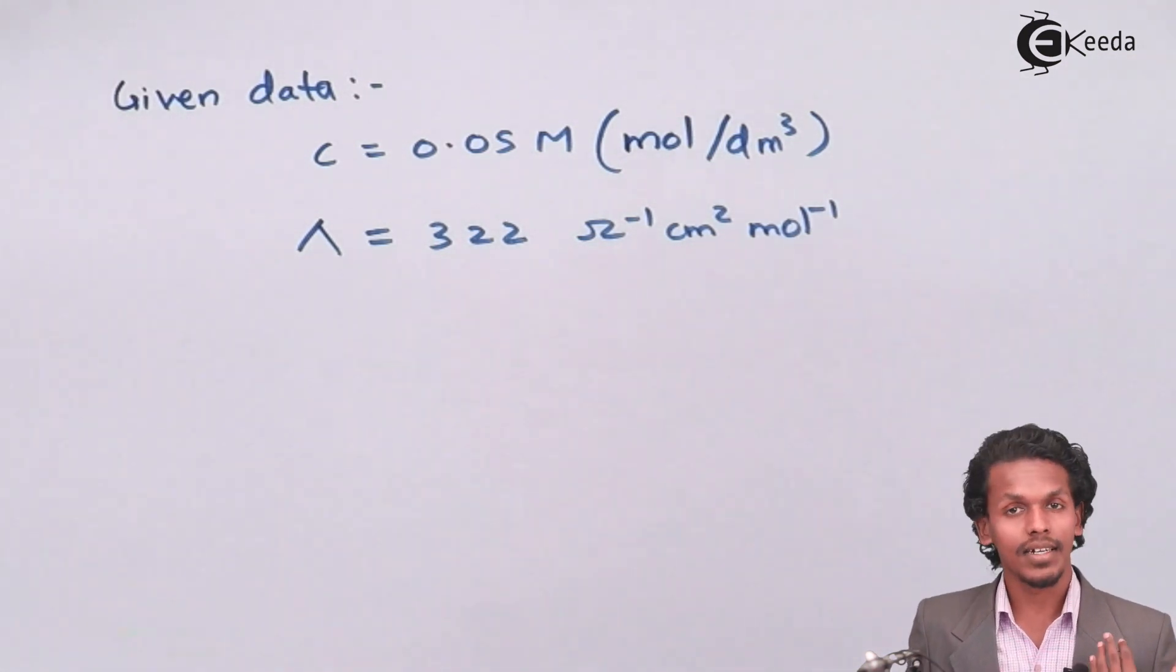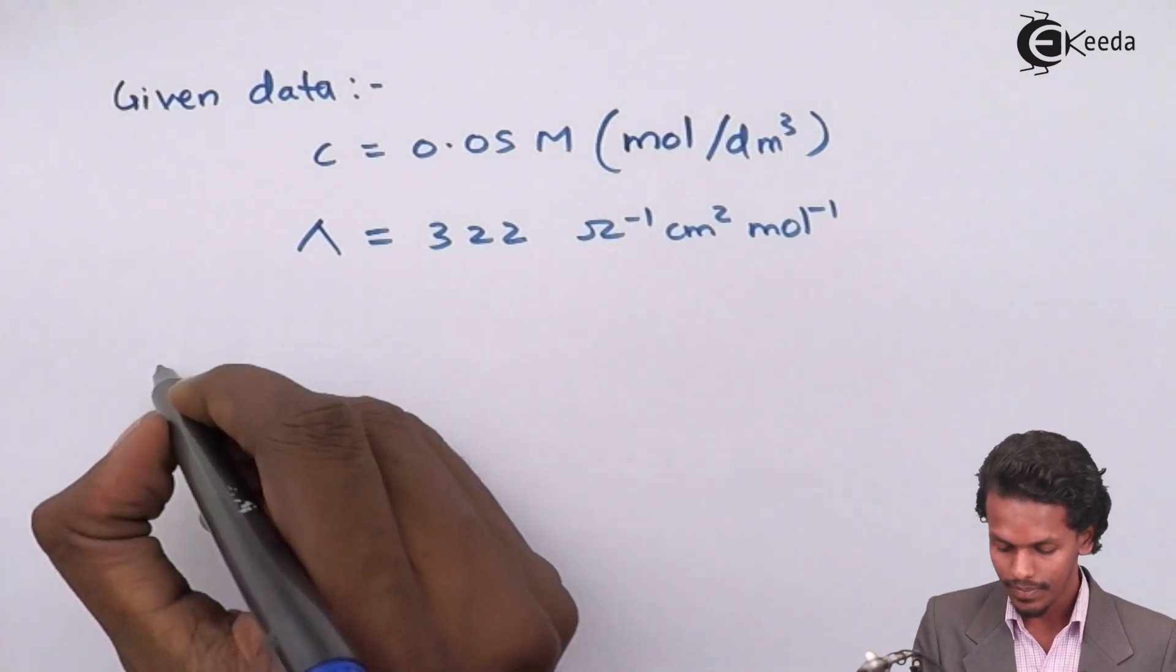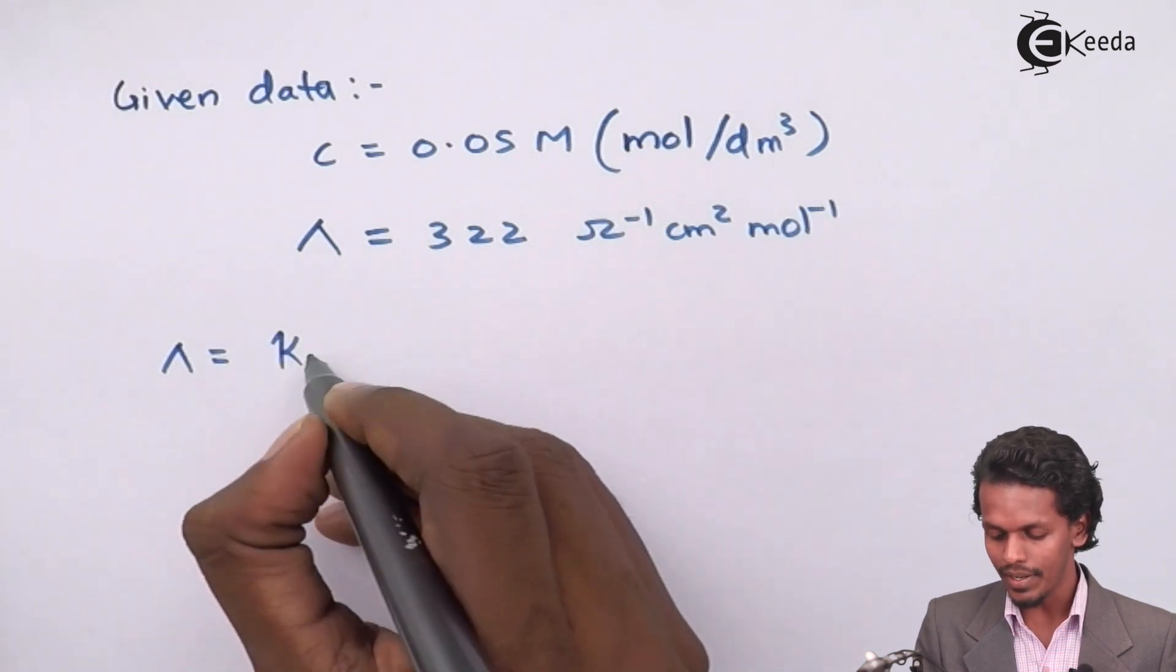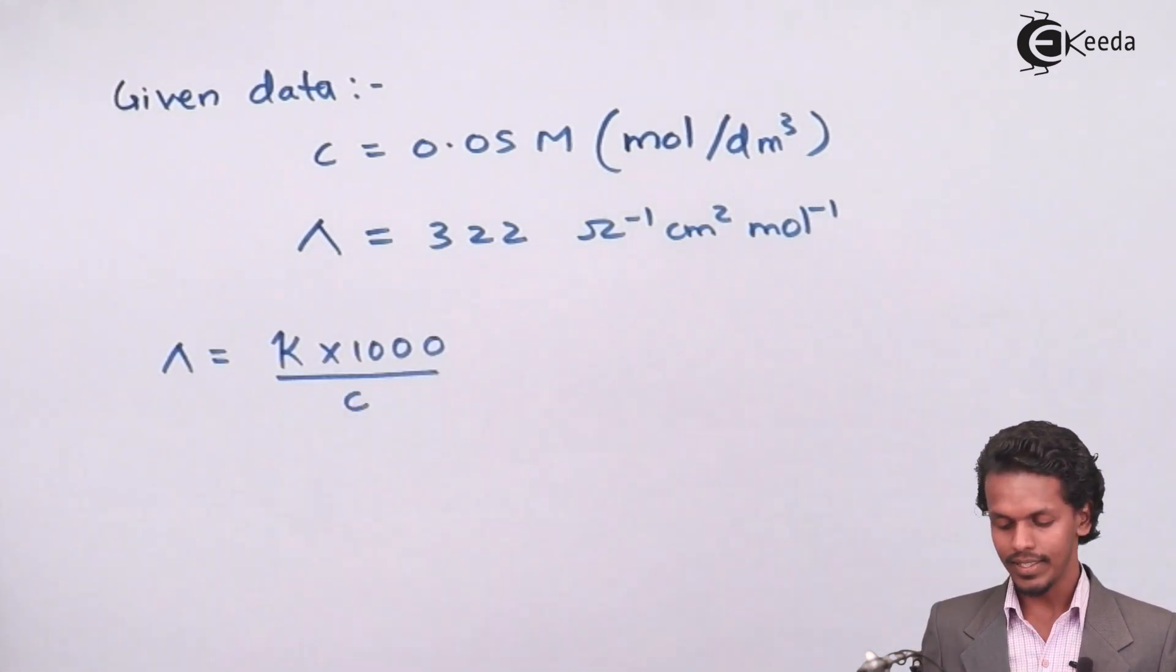The conductivity has a formula: capital lambda equals kappa times 1000 divided by C. In this case, we have to calculate the value of kappa, which is the conductivity.